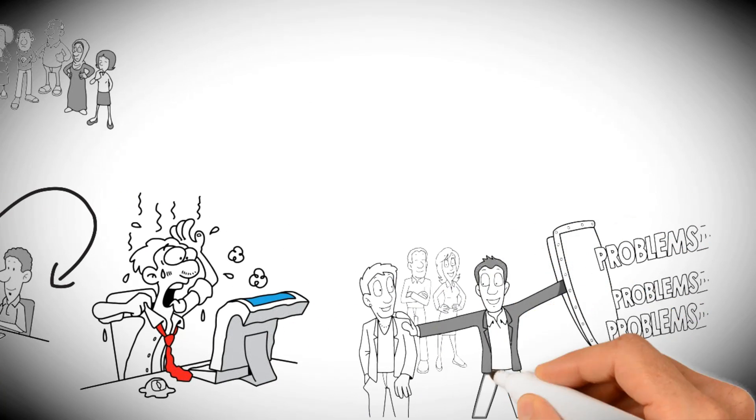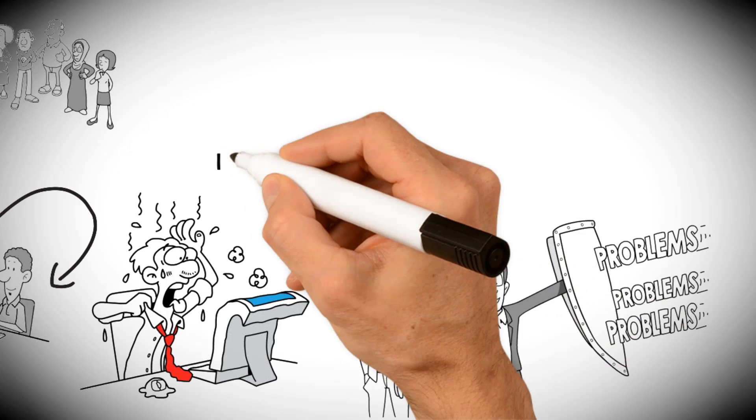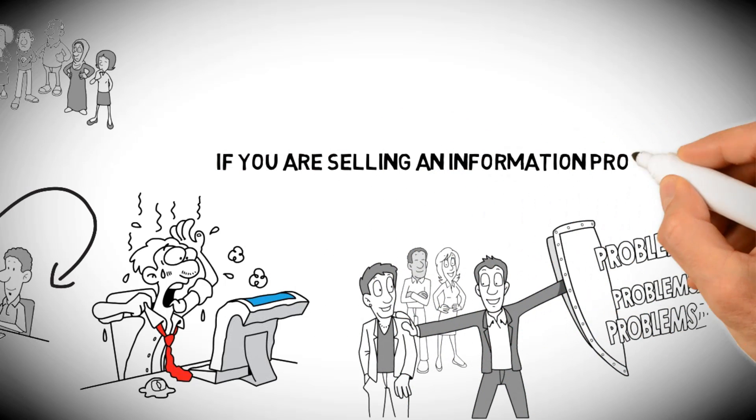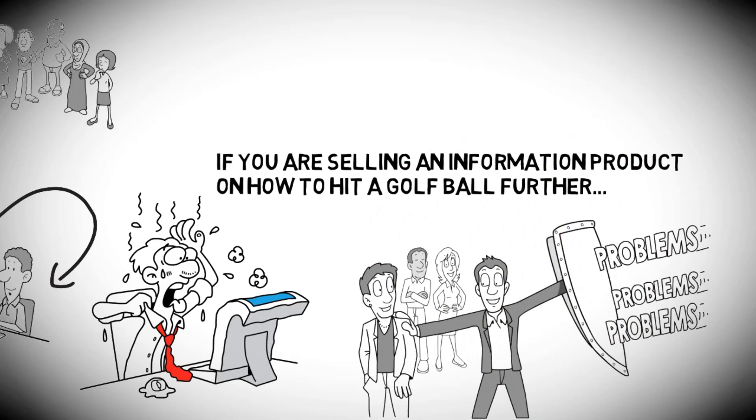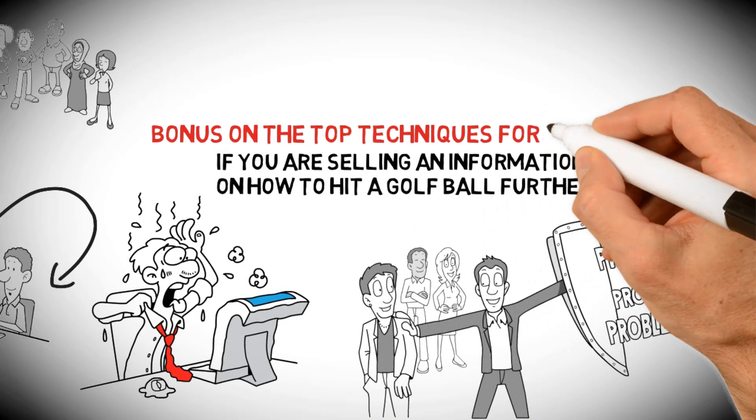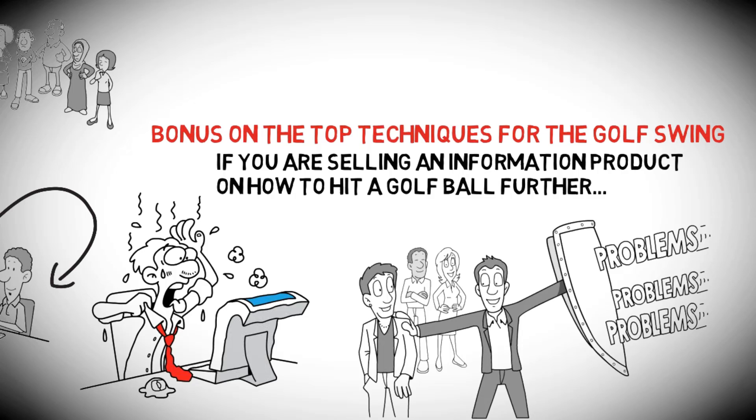One of the best strategies is to create some sort of bonus and offer it to anyone who buys through your affiliate product. For instance, if you are selling an information product on how to hit a golf ball further, you could write a bonus on the top techniques for the golf swing, assuming it is not covered in the product you are selling.